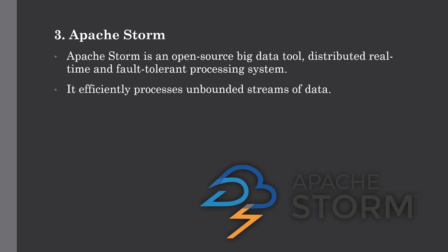The third tool is Apache Storm. Storm is an open source big data tool which is a distributed, real-time, and fault-tolerant processing system. It efficiently processes unbounded streams of data — unbounded streams referring to data which is ever-growing and has a beginning but no defined end. It is very useful for a growing business in its early stage where you can't predict future data volume. Its biggest advantage is it can be used with any programming language and supports JSON-based protocols. Its processing speed is very high, easily scalable, and fault tolerant. A standard observed was as high as millions of tuples processed per second on each node.